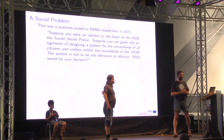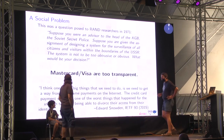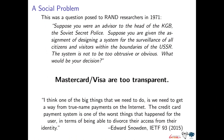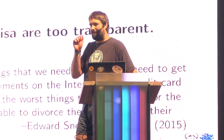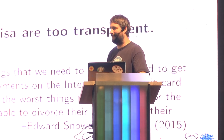So, welcome to the USSR. To quote Snowden: 'I think one of the big things that we need to do is find a way to move away from true name payments on the internet. The credit card payment system is one of the worst things that happened for the user in terms of being able to divorce their access from their identity.' It's not just that the credit cards have numbers — it's the idea that you need to prove who you are in order to pay. That's the problem.